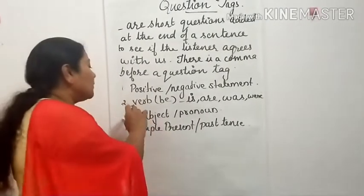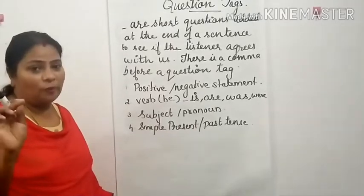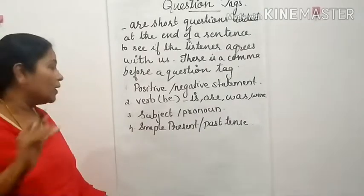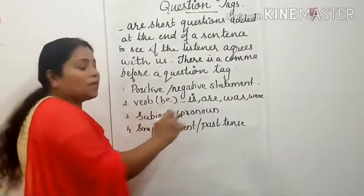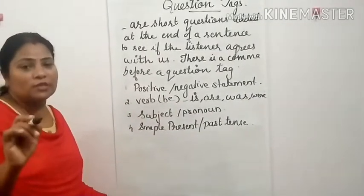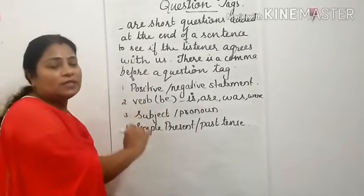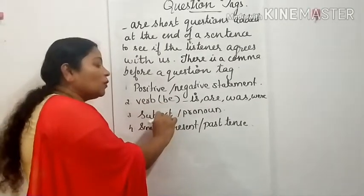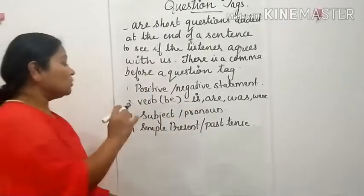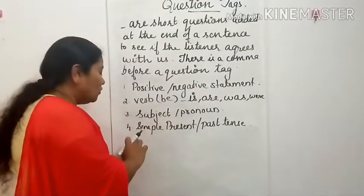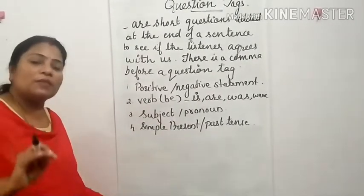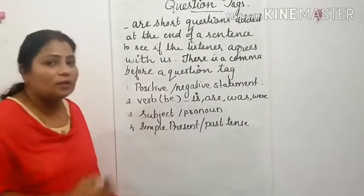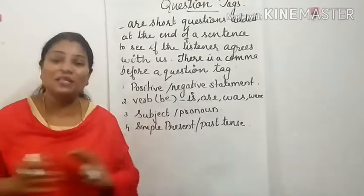Then you should know about the verb 'be' forms: is, are, was, were — all these things you should know. Then subject and pronoun, because the pronoun in the question tag should agree with the subject in the sentence. The fourth thing is you should know simple present tense and past tense. If you know all these things, then I am sure question tags are going to be very easy for you.